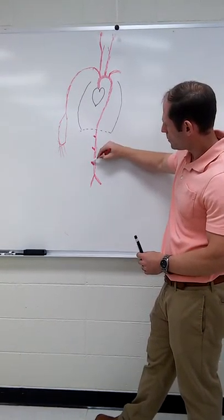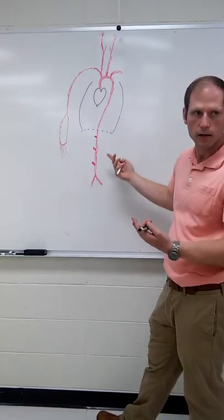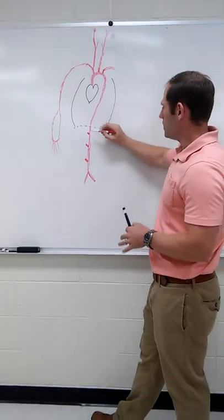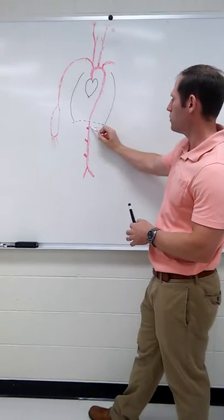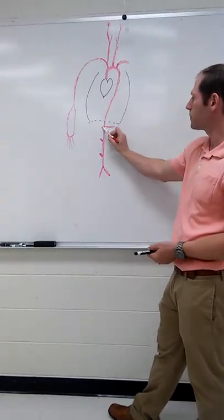Next branch down here, this one's above that one, hence superior, hence inferior. Okay, this is going to probably be really messy, but this will then almost immediately branch. It'll come over here to your spleen, that's your spleen artery. This one go